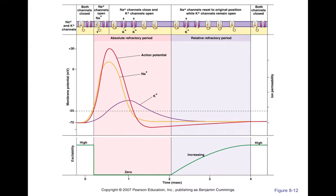Sodium comes rushing into the cell because sodium is in higher concentration outside and lower concentration inside — that was set up by the sodium-potassium pump. Sodium comes rushing in, causing a huge influx, which makes our voltage really positive. Then towards the peak of this action potential, those voltage-gated sodium channels close — they snap shut, no more sodium.